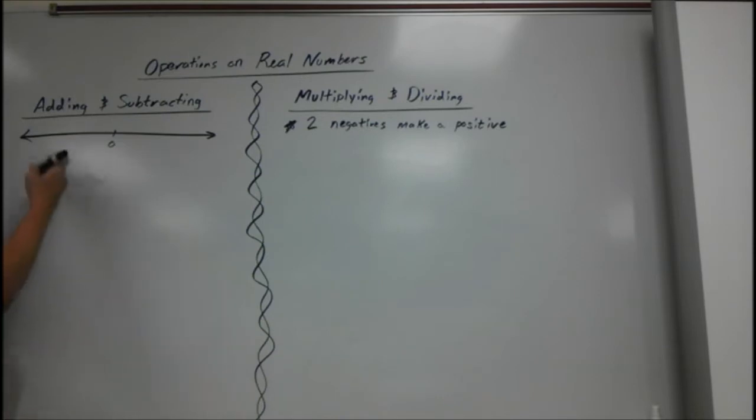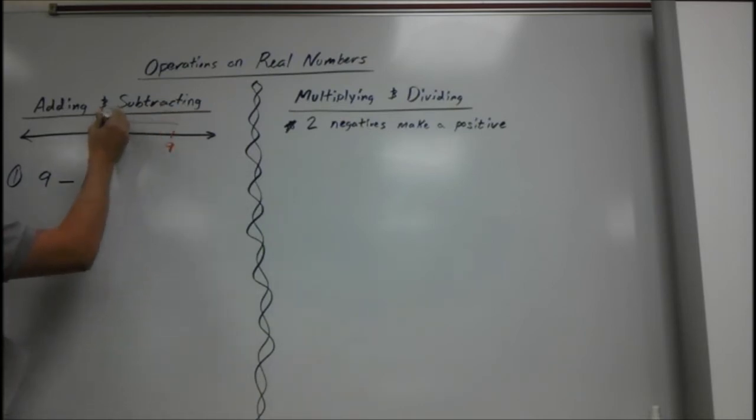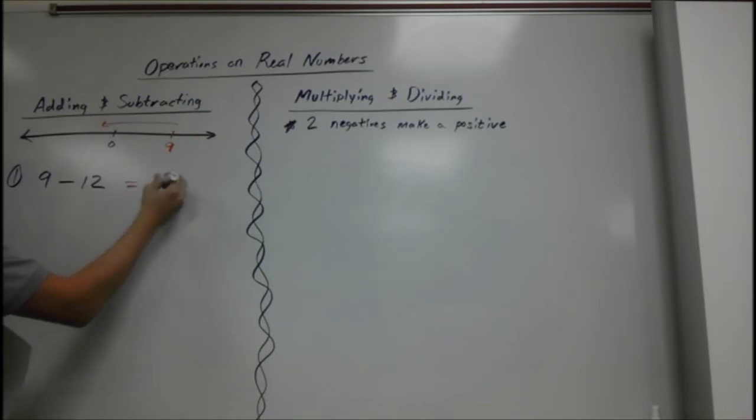First one, start out with something simple. Say we have 9 minus 12. If we're thinking about the number line, we know 9 is about right here. If we're taking away 12 from it, so we're minusing 12, it's going to give us negative 3. 9 take away 12 brings us all the way back to negative 3.